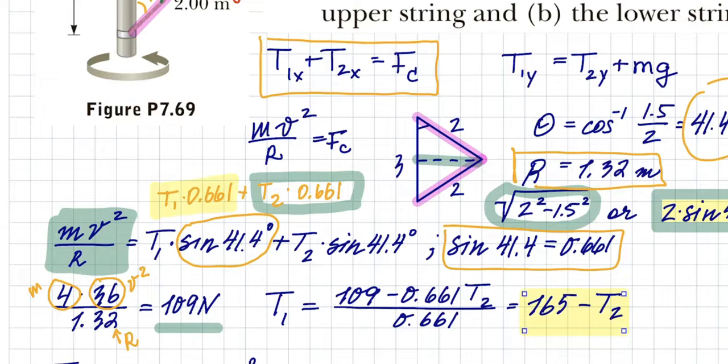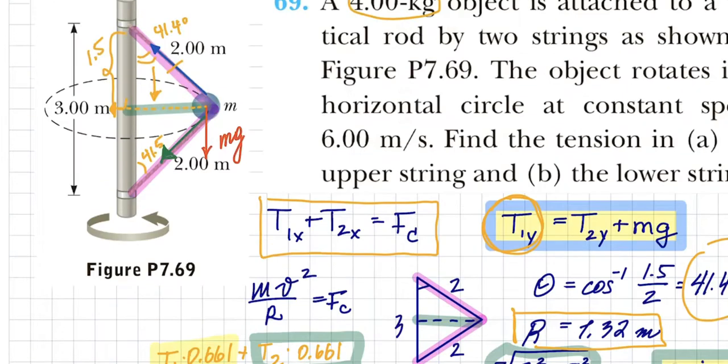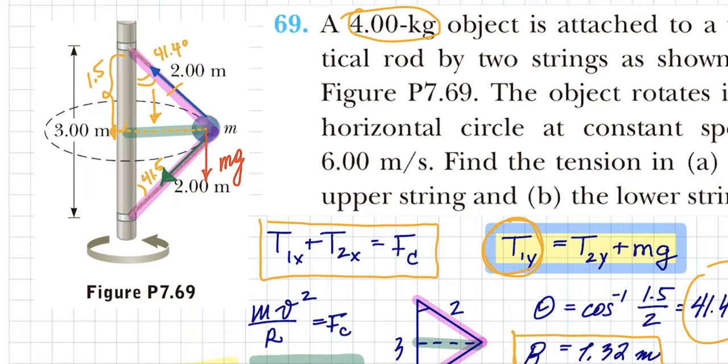Then I can go back to this equation and use this equation with the substitution of 165 minus T2 instead of T1. And remember, the Ty will be through cosine, because this is the y component.